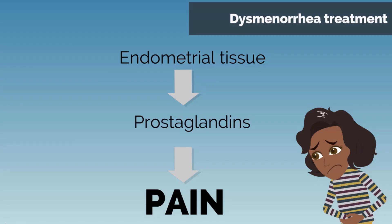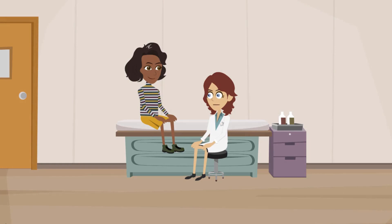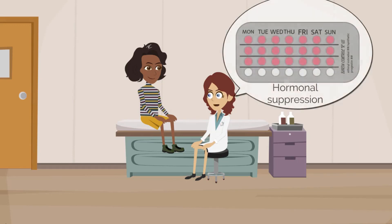As dysmenorrhea is mediated by prostaglandins released from endometrial tissue, first-line treatment is targeted at decreasing prostaglandins, as well as by reducing endometrial tissue. For our patient, you recommend taking a non-steroidal anti-inflammatory drug, such as ibuprofen. In addition, you recommend hormonal suppression, such as with an oral contraceptive pill, which will help decrease pain and serve as birth control if needed.